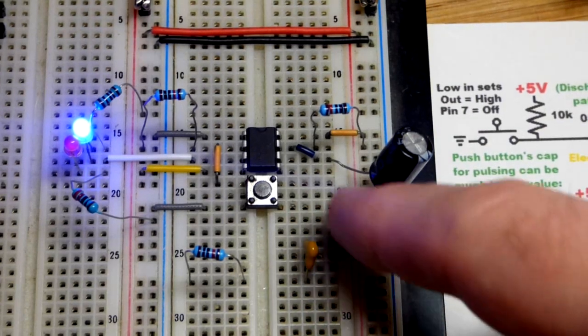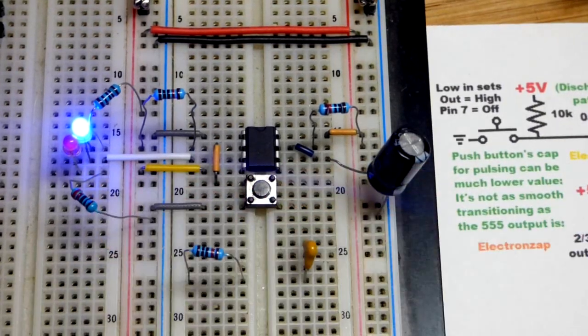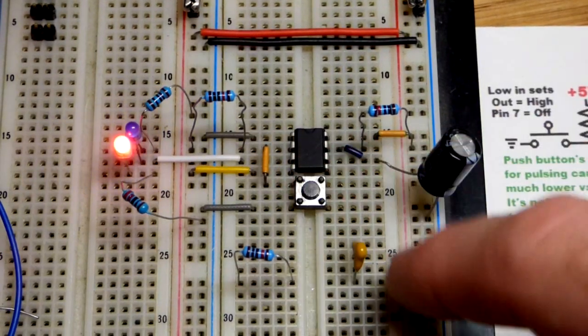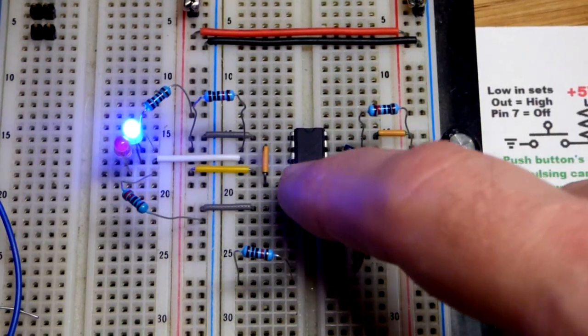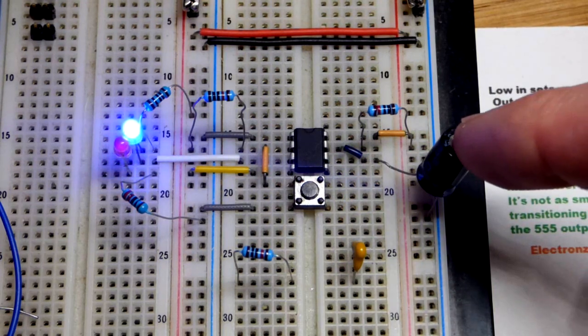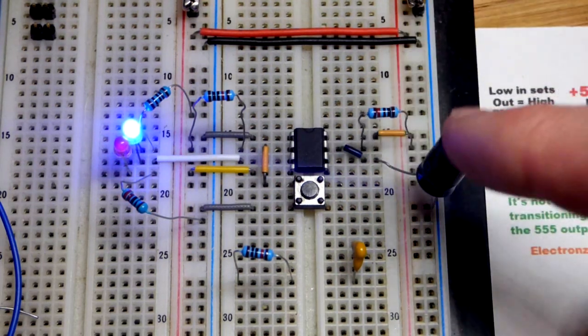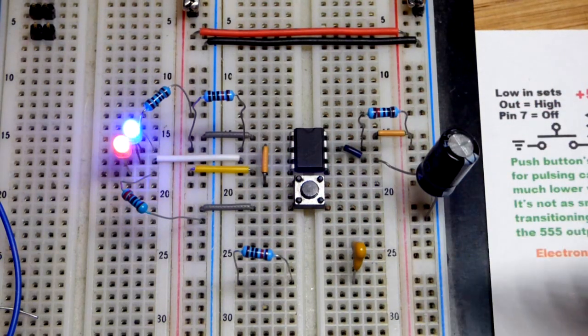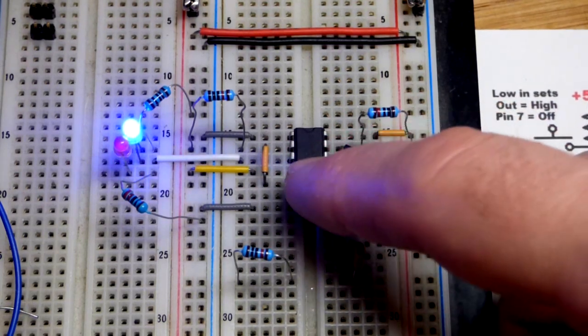So now to begin with we'll take another look at the 555 timer wired in monostable mode. It's a pretty cool circuit. You give a press of the button, the output stays high for a time determined by that capacitor and that resistor, and then it goes back low. It works pretty nice, but there is one problem.